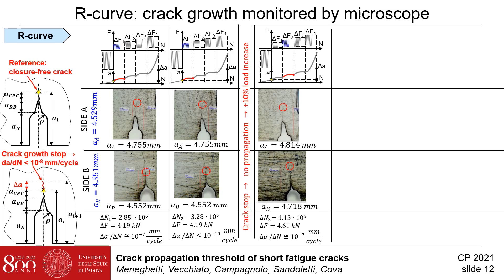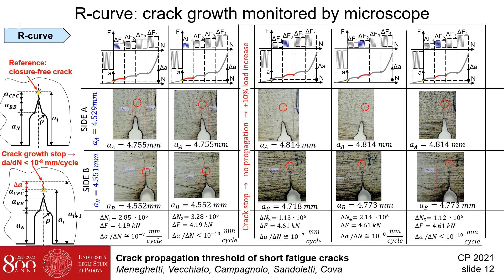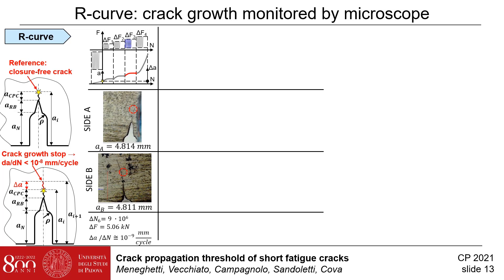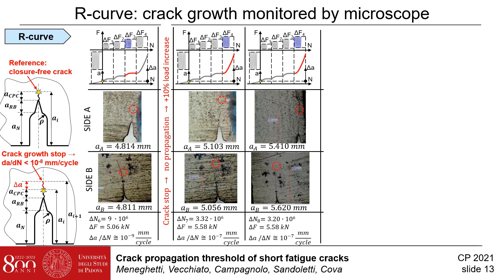Then, the load has been increased by 10%, reaching 4.61 kN, which makes the crack propagate about 0.06 mm at site A and 0.16 mm at site B after 1.13 million cycles. After other 2 million cycles, the crack does not show further propagation at site A, while it propagates 0.055 mm at site B. Finally, after other 1 million cycles, the crack has stopped. The load has been increased again by 10%, reaching 5.06 kN, and after 9 million cycles, the crack propagated at site B by 0.038 mm, while at site A it does not show further propagation. The load has been increased again by 10%, reaching 5.58 kN. The crack started to propagate as detected after 3 million cycles, and it does not stop anymore, even after other 3 million cycles.